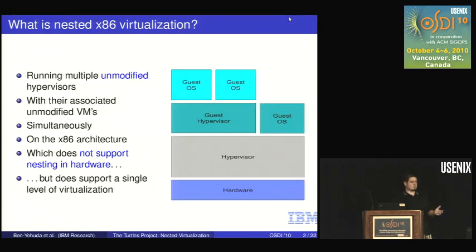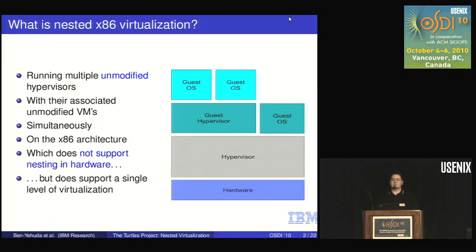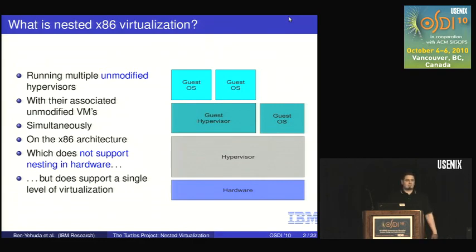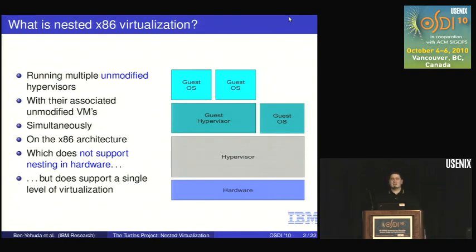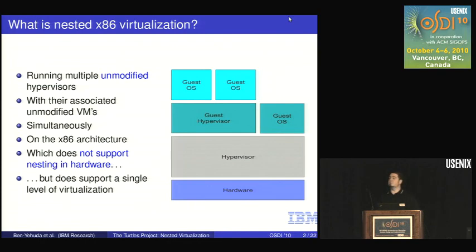What is nested x86 virtualization? Quite simply, it is running multiple unmodified hypervisors with their associated virtual machines — running VMware, Hyper-V, Xen, KVM with whatever x86 operating system you would like, such as Linux or Windows, simultaneously on an x86 machine. As most of you know, x86 has some support for single-level virtualization, but has no support for nested virtualization — running multiple hypervisors.